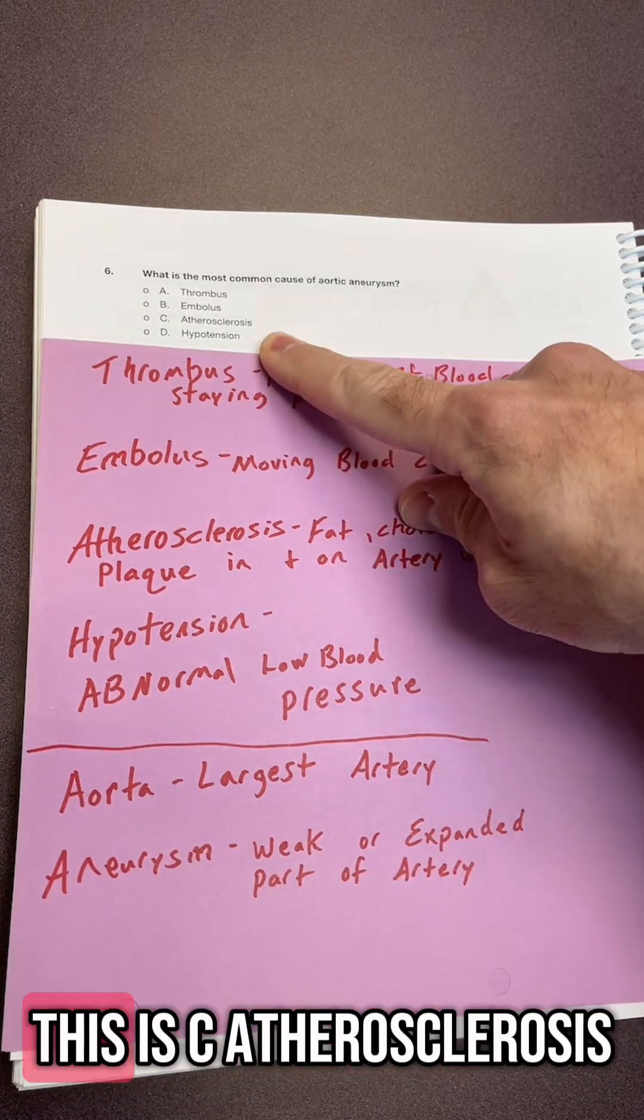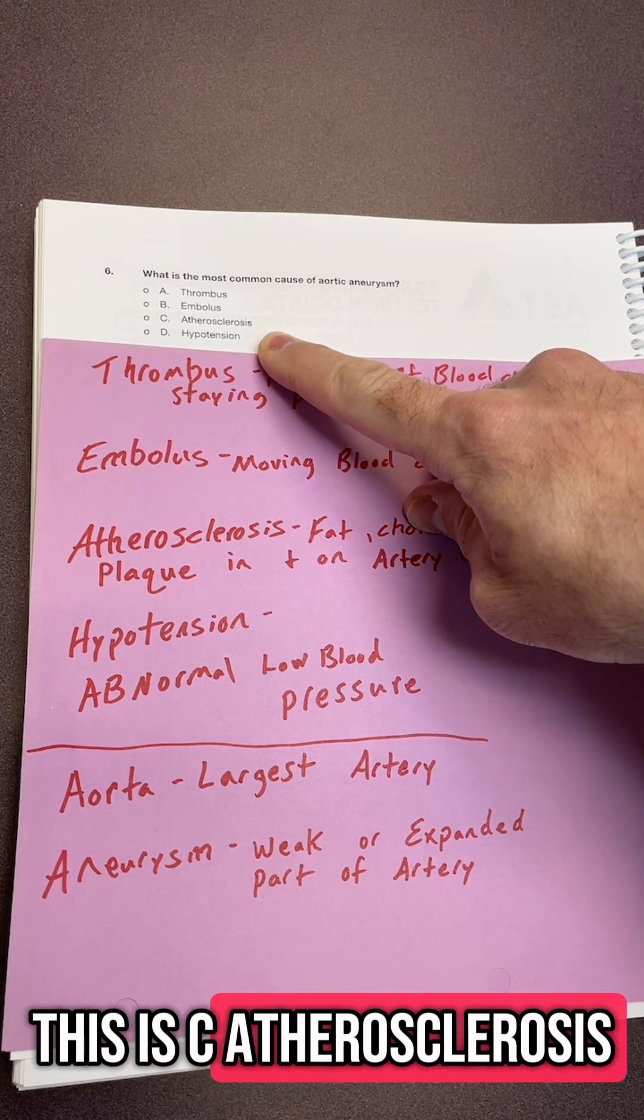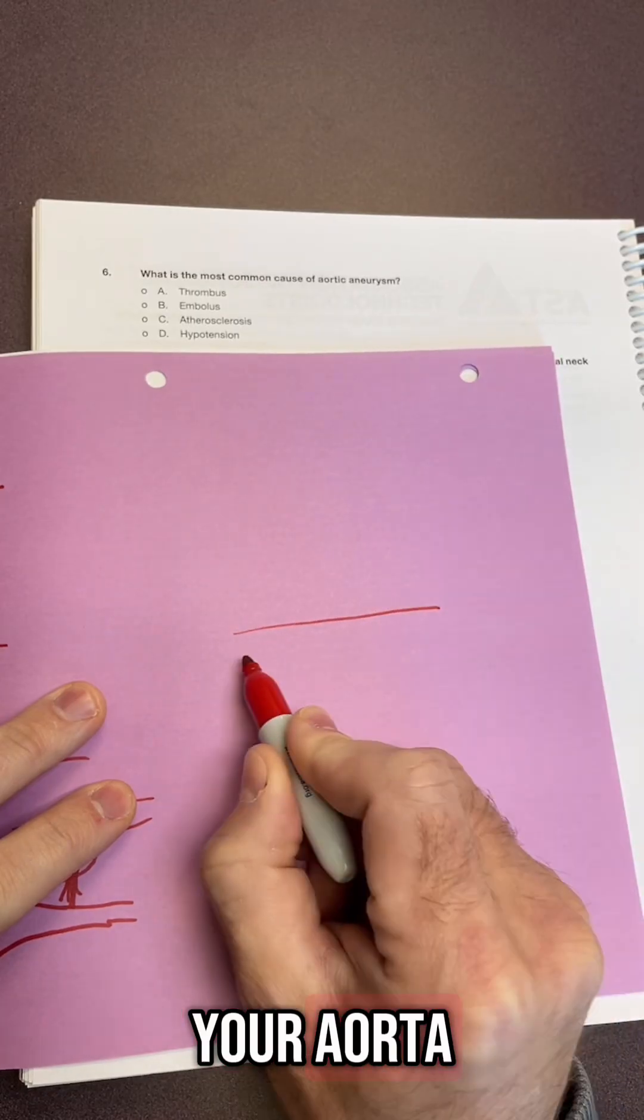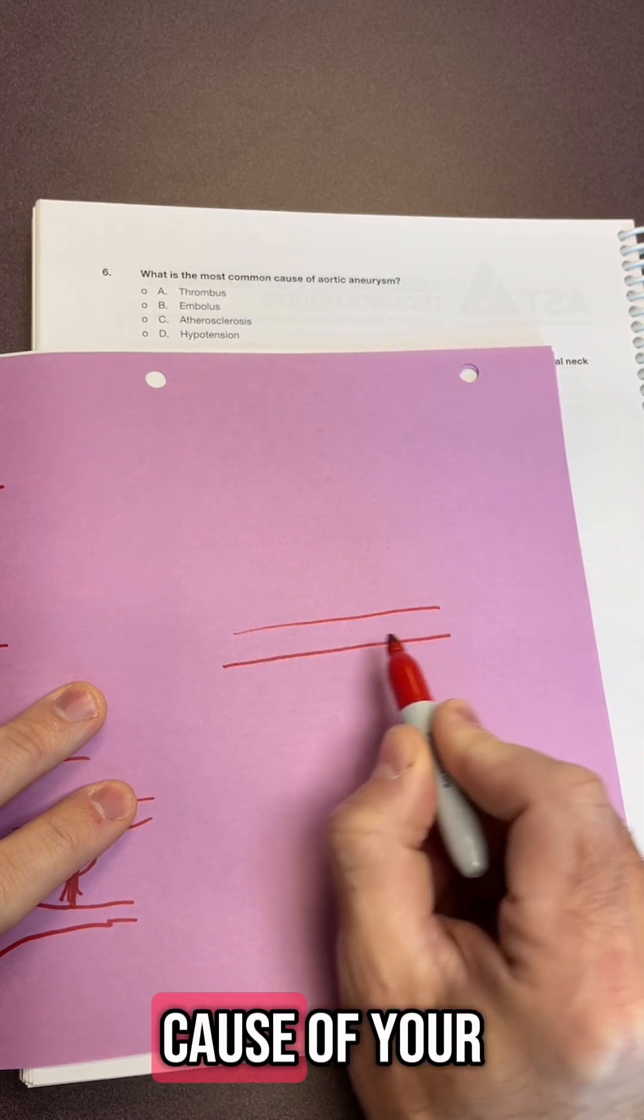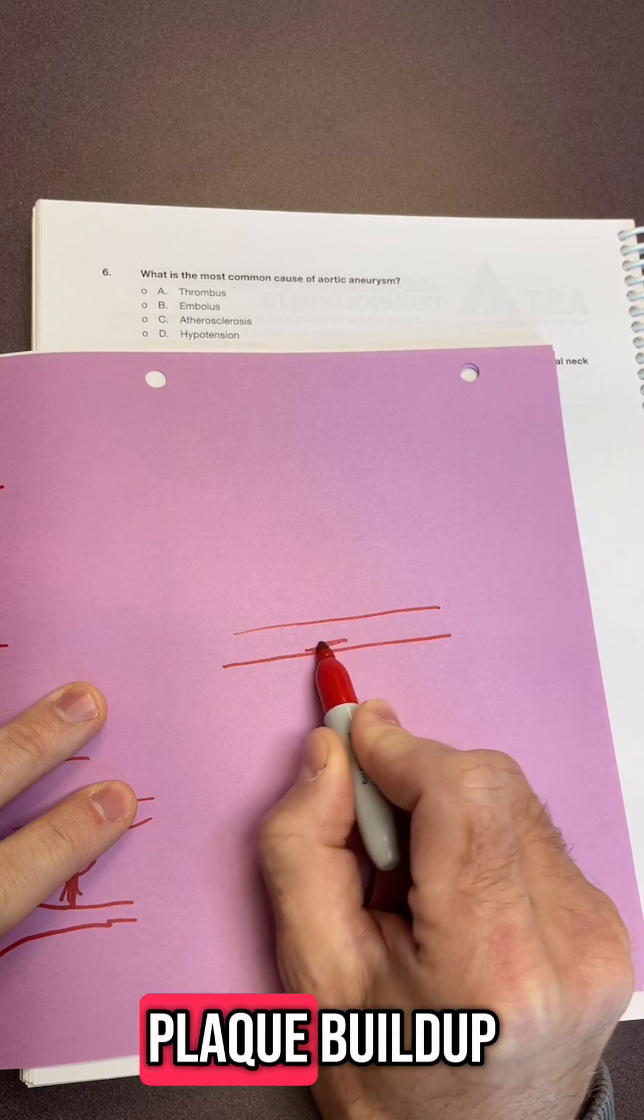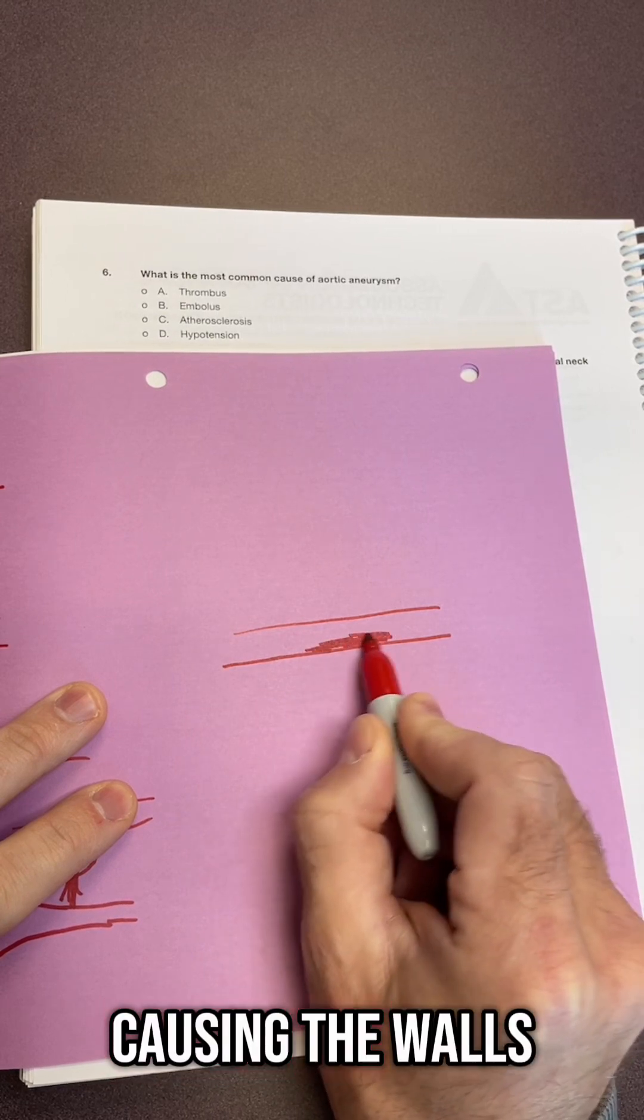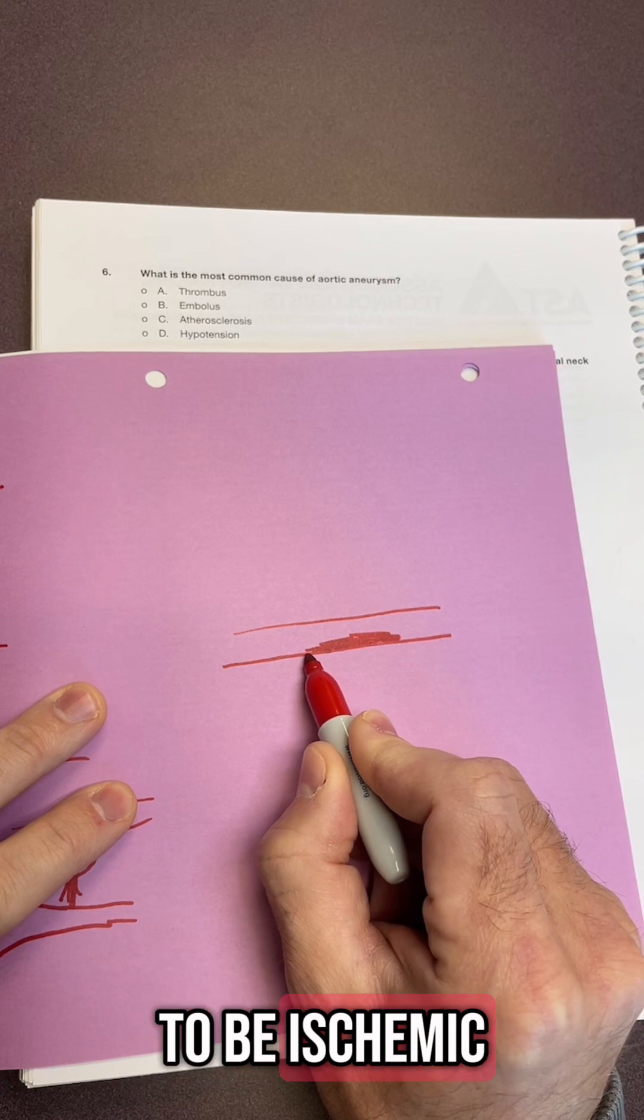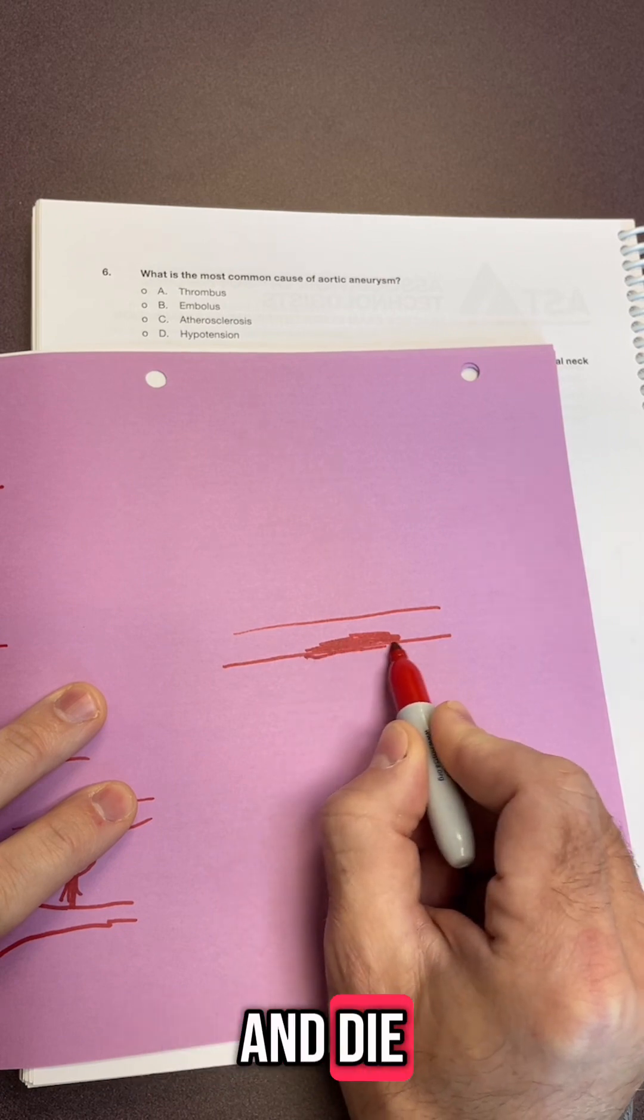And the answer to this is C, atherosclerosis. Now why is that true? In your aorta, the most common cause of your aortic aneurysm is plaque buildup causing the walls of your vessel to be ischemic, lacking oxygen, and starts to decay and die.